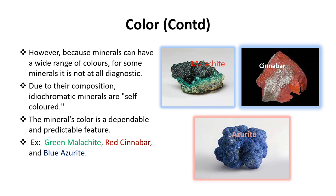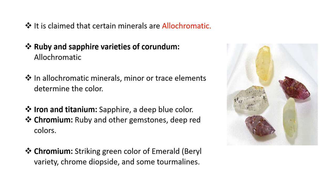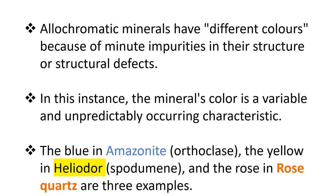Allochromatic minerals exhibit different colors because minor or trace elements determine the color. For example, ruby and sapphire are varieties of corundum and are allochromatic. Sapphire's deep blue color is mainly due to the presence of iron and titanium. The deep red color of ruby is due to the presence of chromium. Chromium is also present in some emeralds (a beryl variety), giving them their green color, and also in chrome diopside and some tourmalines.